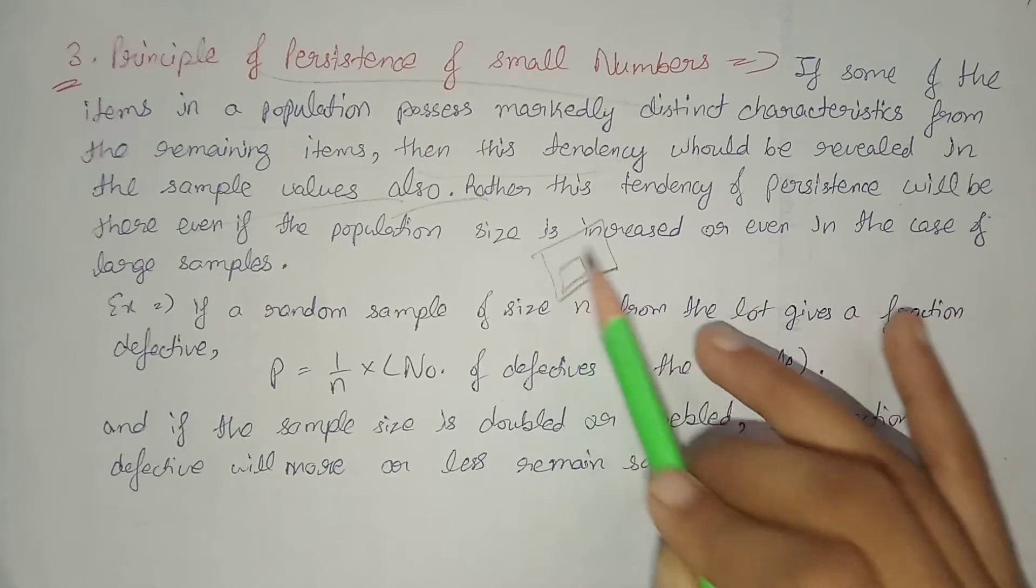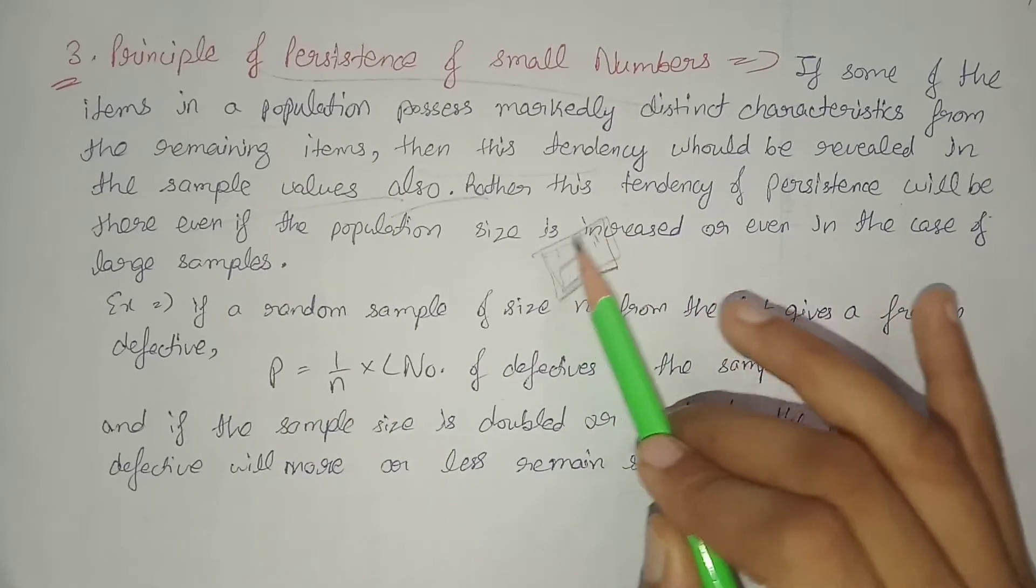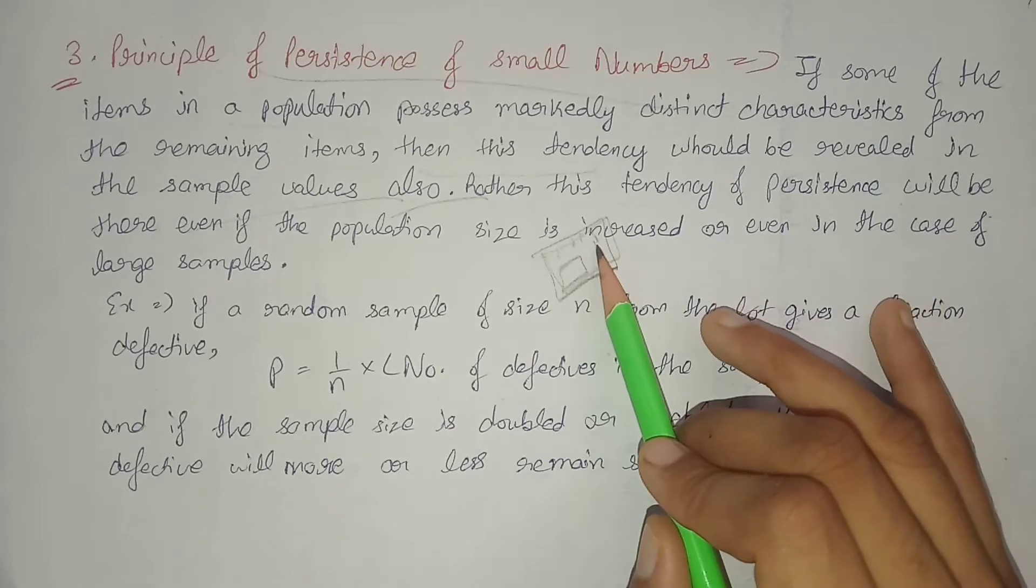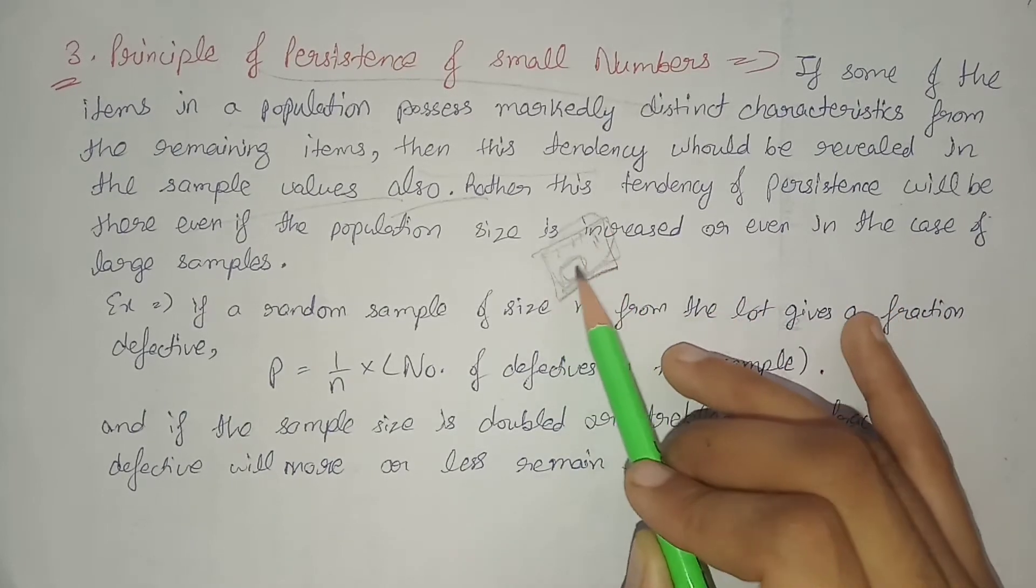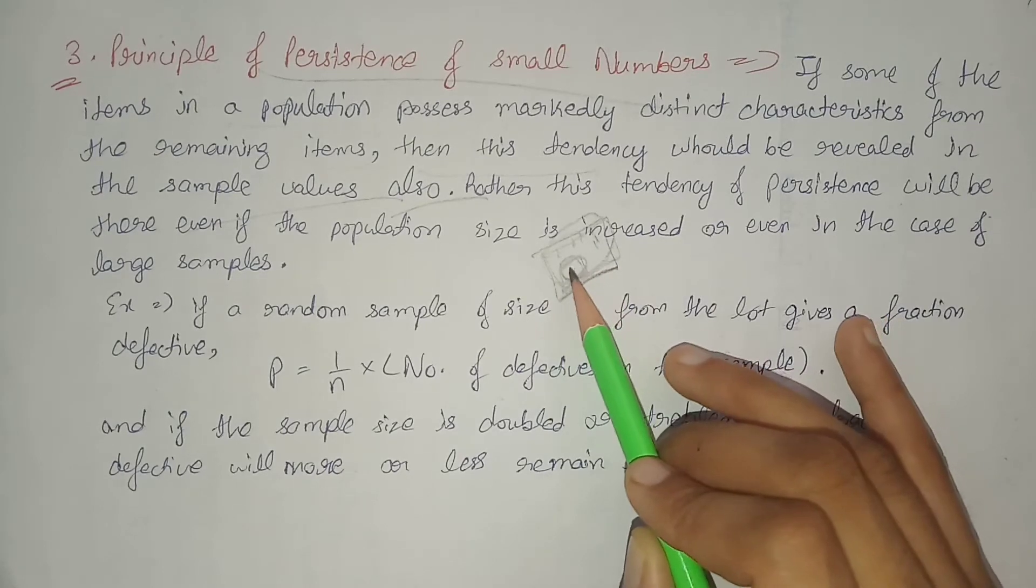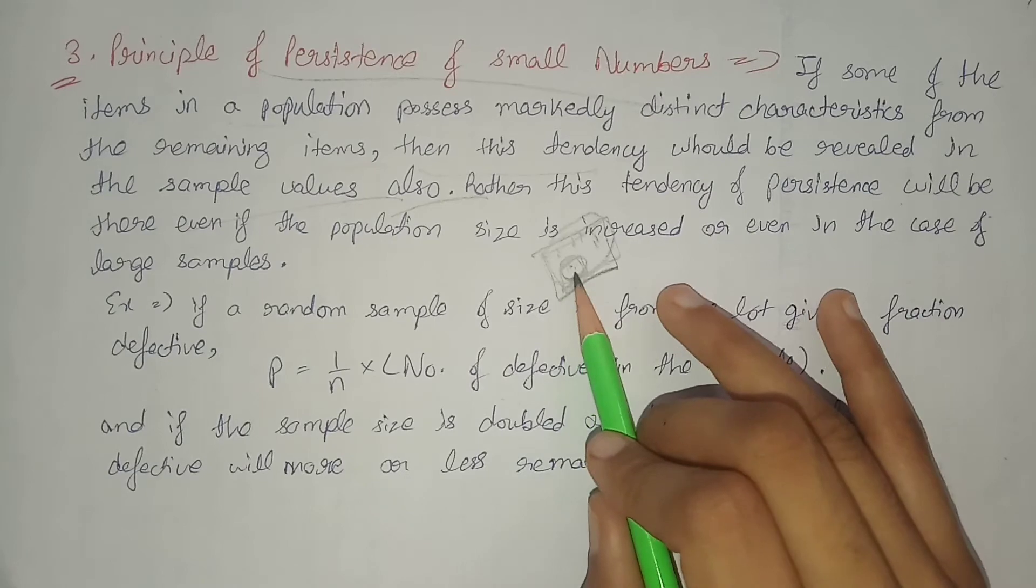That is, if in the population from which we took the sample, some units have special characteristics, then when we take a sample from this population, some units in the sample will also be present that follow those special characteristics.